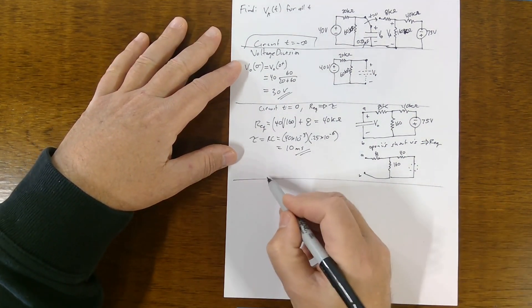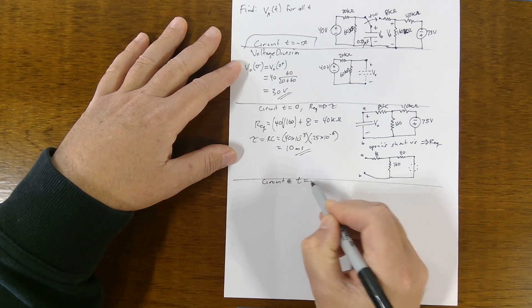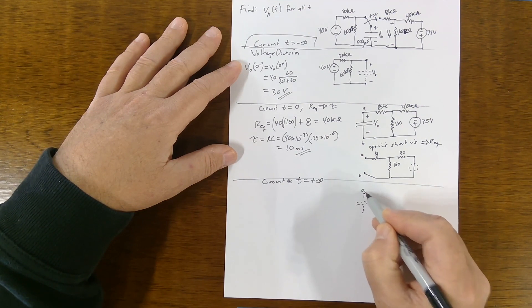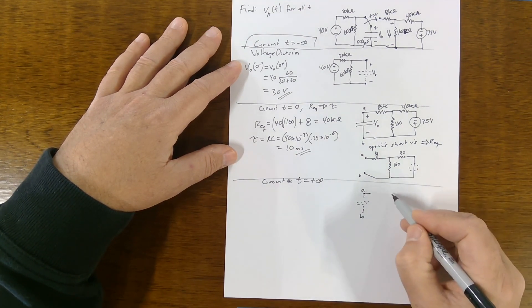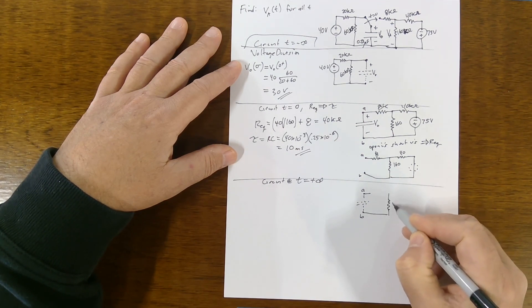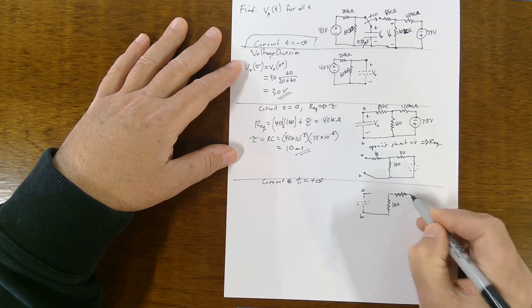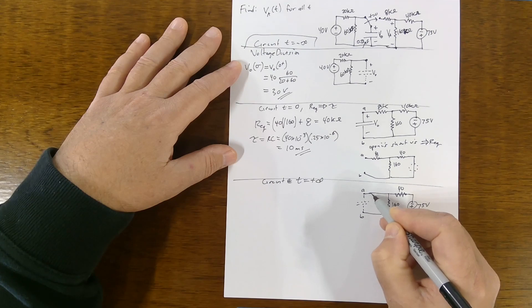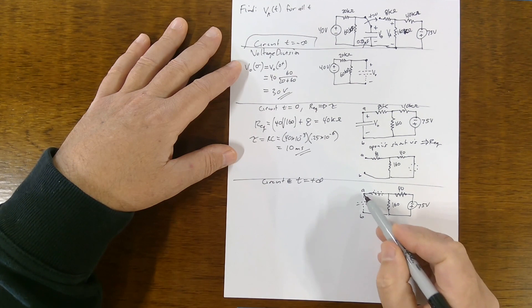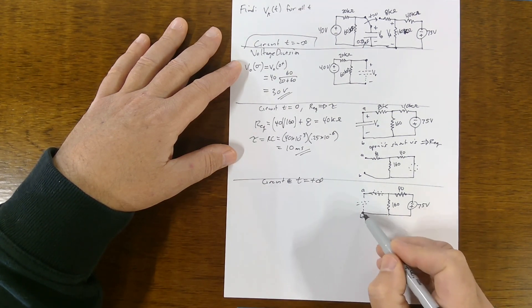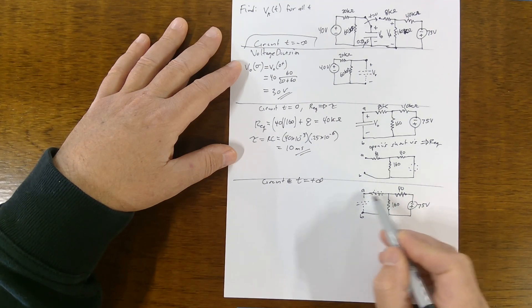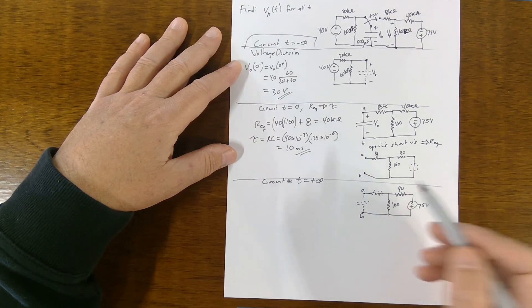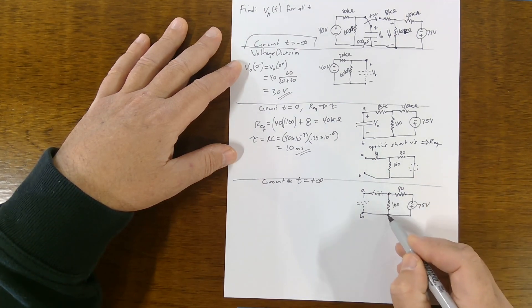Next, we solve the circuit at t equals positive infinity. At that state, the cap acts like an open circuit again. The 8 kilohm resistor kind of goes away, because at positive infinity the capacitor acts like an open circuit, which means there is no current through this resistor. If there's no current through the resistor, there's no voltage drop — so it's behaving like a wire with no current in it.